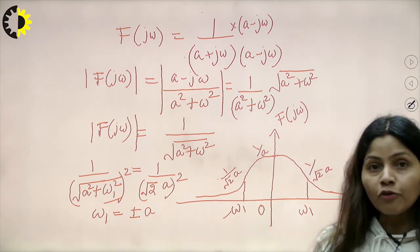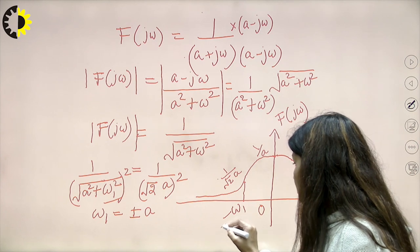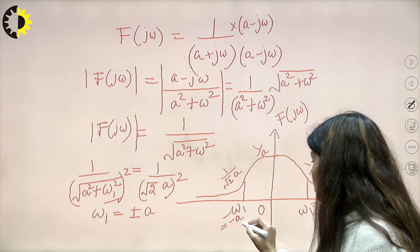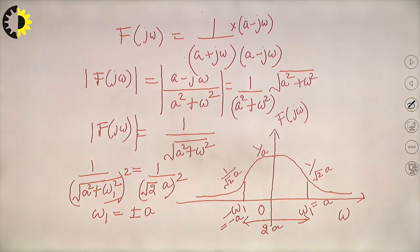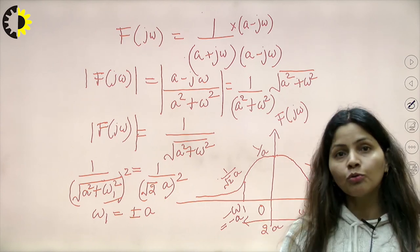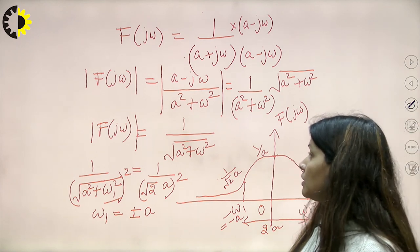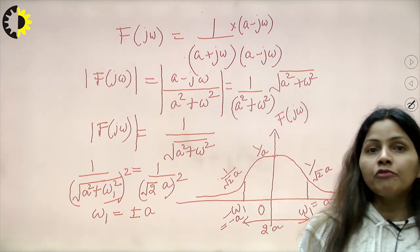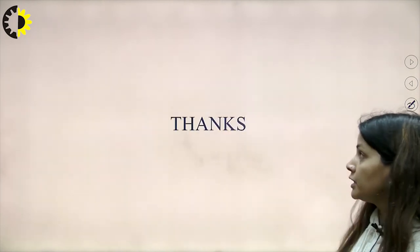Now we define the bandwidth: ω₁ = +a and −ω₁ = −a, so the bandwidth becomes 2a. The bandwidth of the given signal is 2a. We have calculated the bandwidth, drawn the spectrum, and summarized the Fourier transform analysis of the given signal. That is all for this lecture. Thank you.